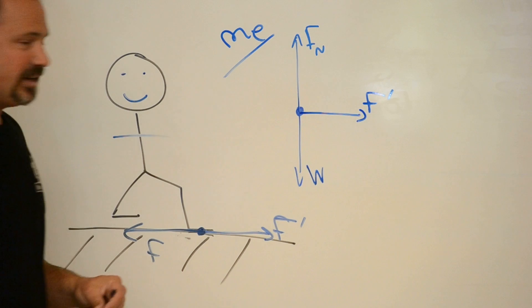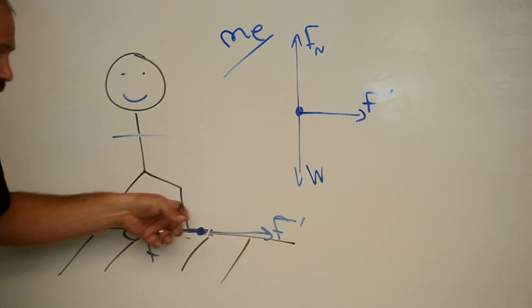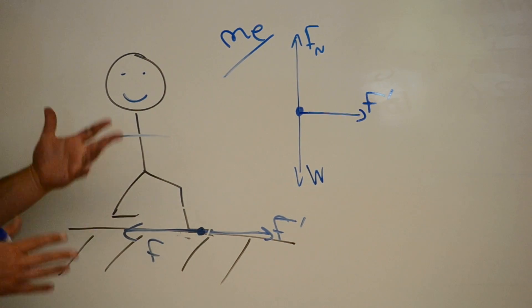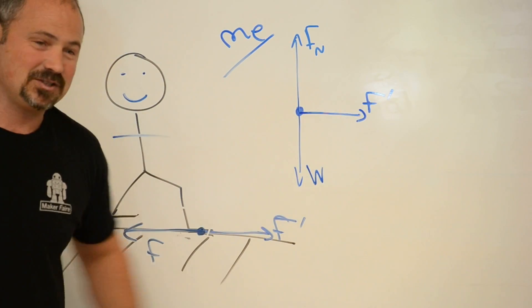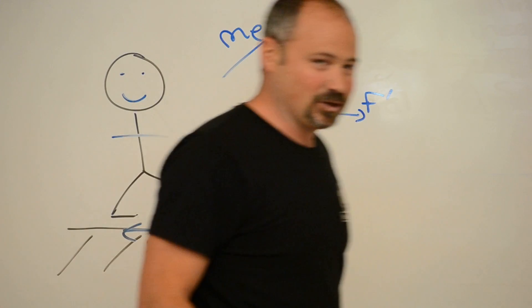The free-body diagram for the ground would contain this force. You have a force this way, therefore you have acceleration, and thus you can start walking.